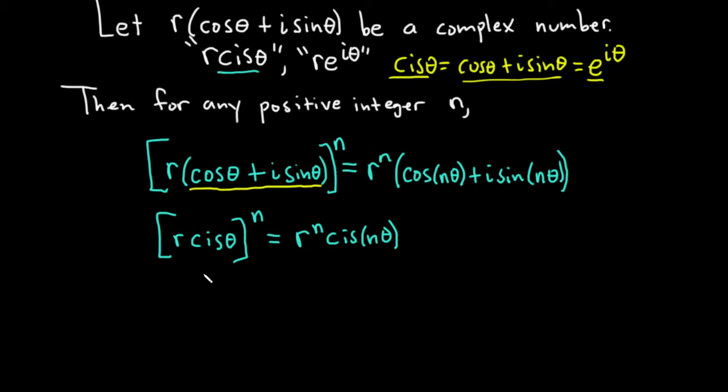So continuing here with De Moivre's, let's write it down using this exponential notation. So we have r e to the i theta raised to the nth power, and this would be r to the n, e to the i n theta. And this makes more sense for a lot of people. You're basically exponentiating the e. n times i theta is n times i theta. So algebraically, this is the one that makes the most sense for people. So all three of these are considered De Moivre's theorem.